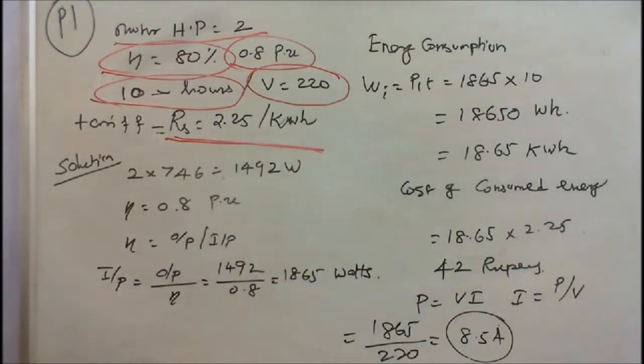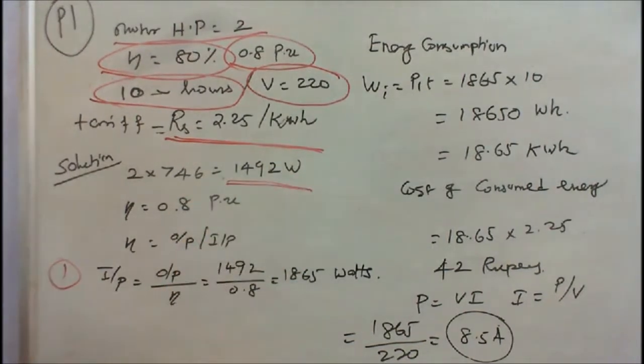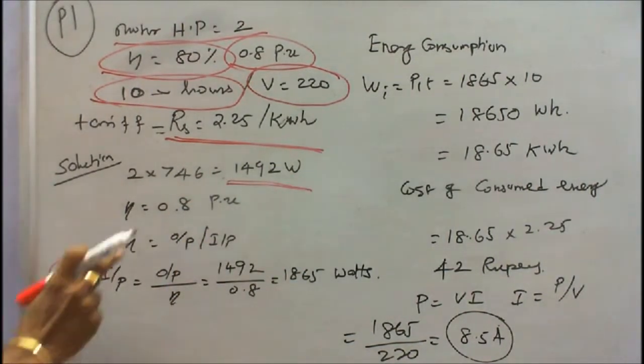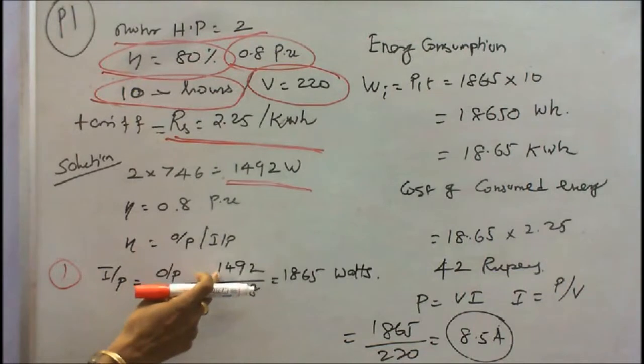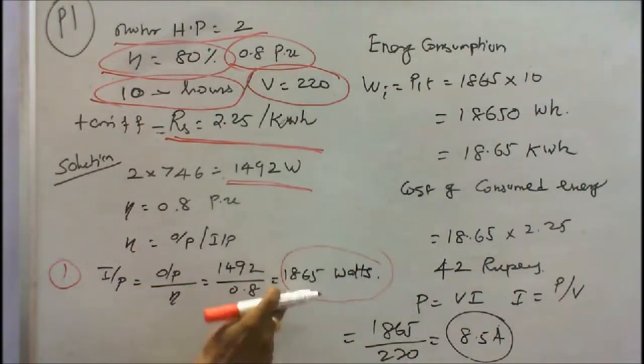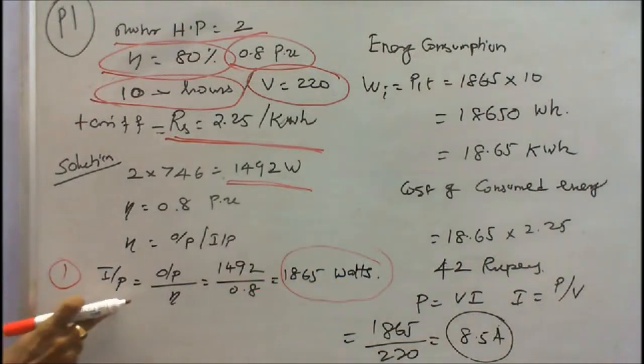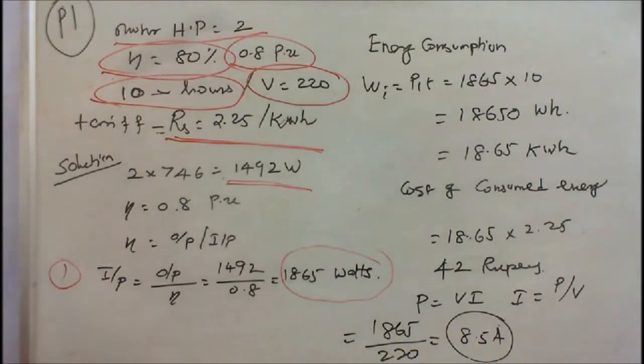In this problem, the motor horsepower is given 2 HP and efficiency is given 80%, we convert it to 0.8 per unit. Operating voltage is given 220V DC. We have to find the input. So 2 HP into 746 will get 1492 watts. Efficiency is given 0.8, we can find the input equals output by efficiency: 1492 divided by 0.8, we will get 1865 watts. Input is 1865 watts. Part A is over.